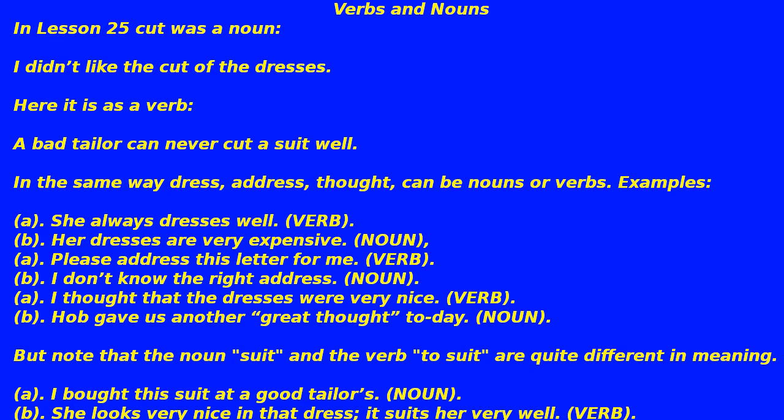(a) Please address this letter for me — verb. (b) I don't know the right address — noun. (a) I thought that the dresses were very nice — verb. (b) Hob gave us another great thought today — noun. But note that the noun 'suit' and the verb 'to suit' are quite different in meaning: (a) I bought this suit at a good tailor's — noun. (b) She looks very nice in that dress, it suits her very well — verb.